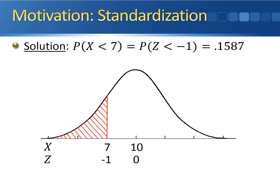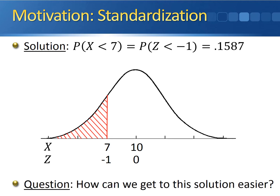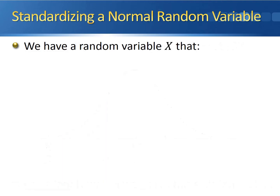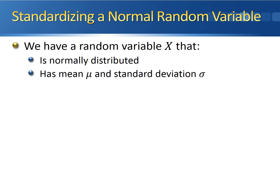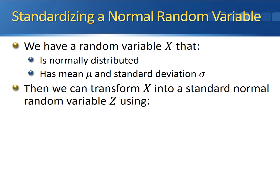Now this was an awful lot of work to get here. How can we get to this solution a little bit easier? Let's say we have a random variable x that follows a normal distribution with a mean of mu and a standard deviation of sigma. Then we can transform x into a standard normal random variable z to use the standard normal table, using this equation.